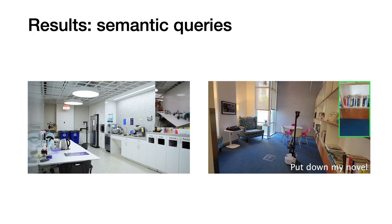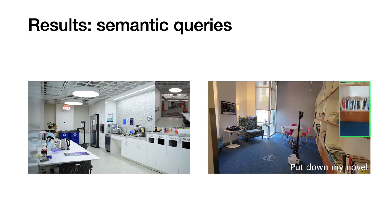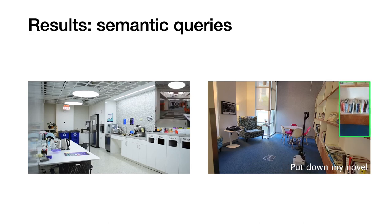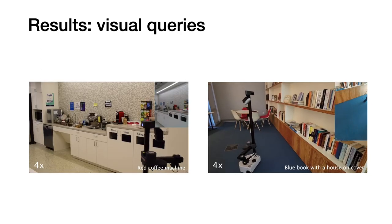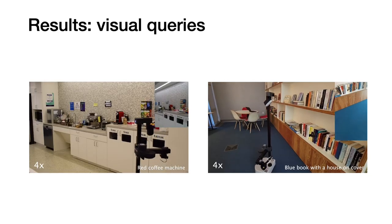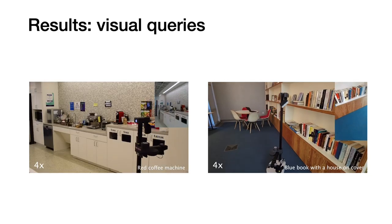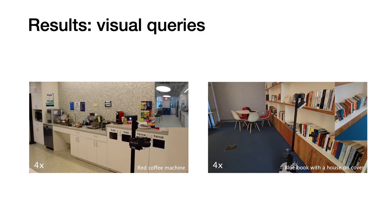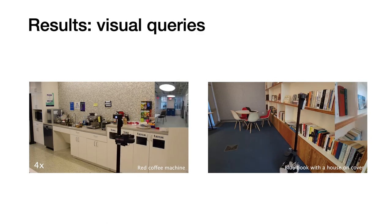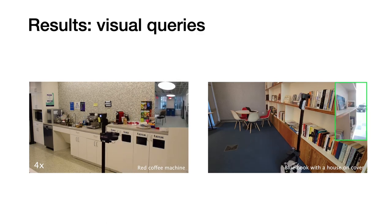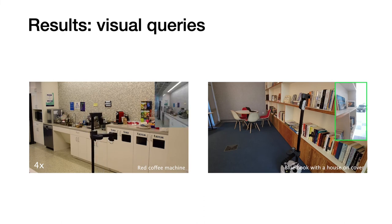As we can see, ClipFields can enable robots to perform semantic navigation in a real world space with no human labels. Even beyond that, ClipFields can be queried with visual properties as well, such as 'red coffee machine' in the kitchen, or 'a blue book with a house on the cover' in the library.